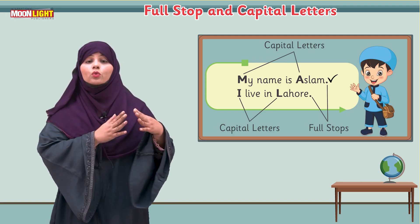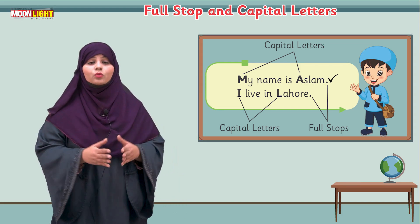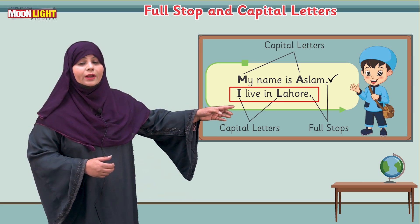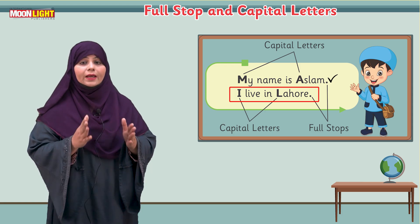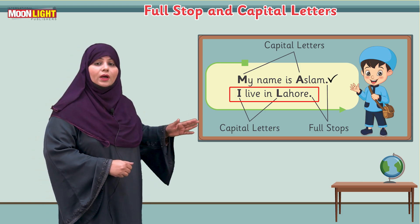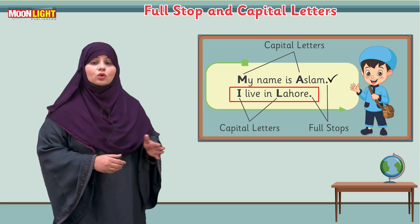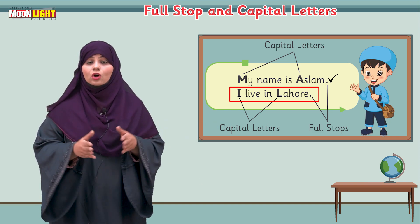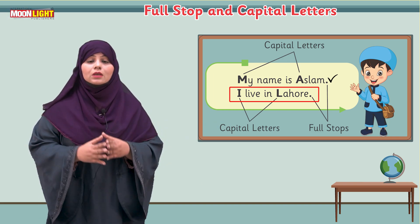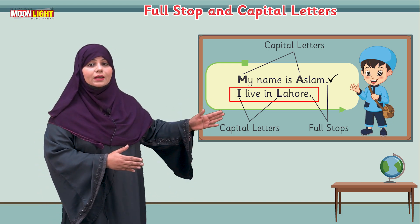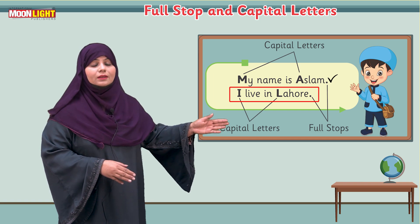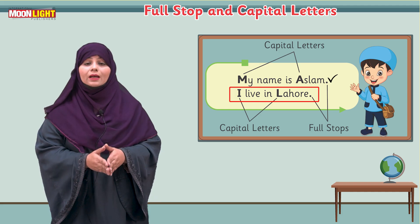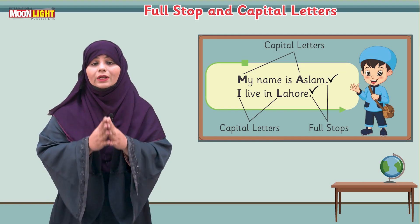My dear kids, do you know there are some exceptions as well? When we write any name, any city name, any day of the week, or any name of a month, we will write it in capital. For example: 'I live in Lahore.' I is the first letter of the sentence, so I write I in capital. Lahore is a city — a proper city — so I will write L in capital, and the rest of the letters in small. At the end, I will put a full stop.